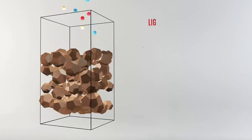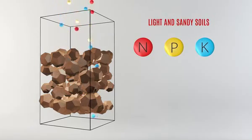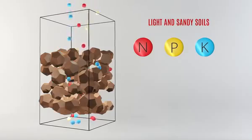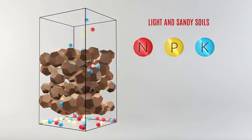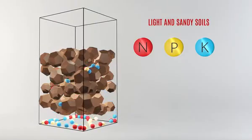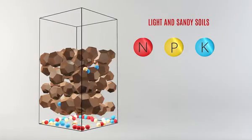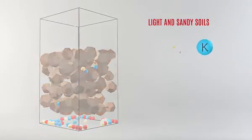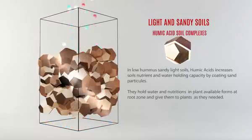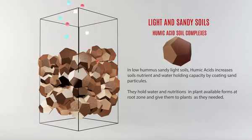Humic acid effects on sandy light soils: In low humus sandy light soils, humic acids increase soil nutrient and water holding capacity by coating sand particles. They hold water and nutrition in plant available forms at the root zone and give them to plants as they are needed.